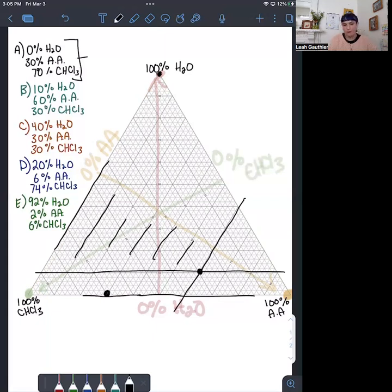Then you can just go back and check that the chloroform matches the data point. We'll have 0% chloroform, 10, 20, and 30. So that is point B.